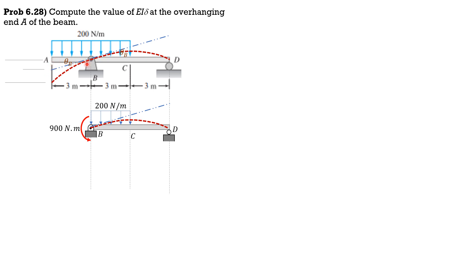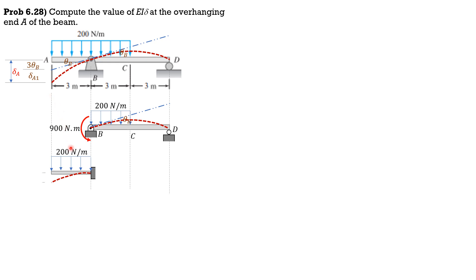The net theta B is due to the combined effect of the couple at B and the 200 N/m uniform load. This is also theta B — the angle between the tangent at B and the horizontal. We have a right triangle where the opposite side equals 3 meters × theta B, giving 3·theta B. I'll call that delta A1. The total distance from A to this point is the deflection at A, which is downward.